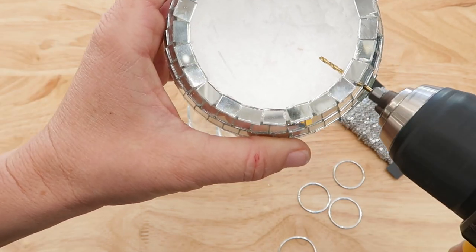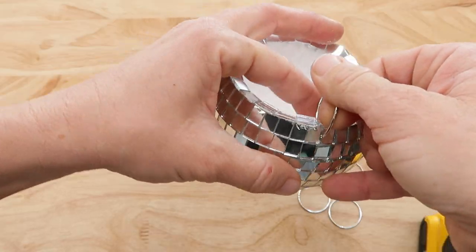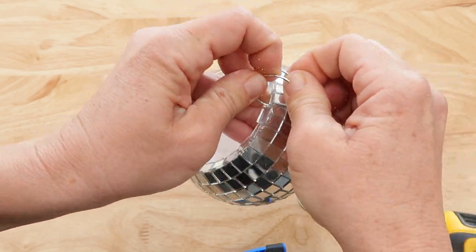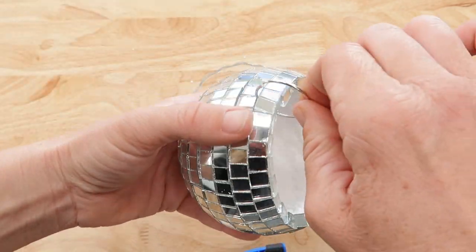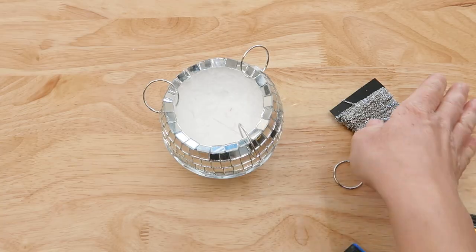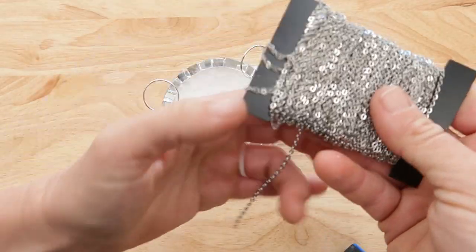And once my pilot holes were drilled, I just went in with the jump ring, made sure to close it off, and push it down to the bottom of the styrofoam so that it made it nice and sleek. Once I had my jump rings all set up, it was just time to add some chain.